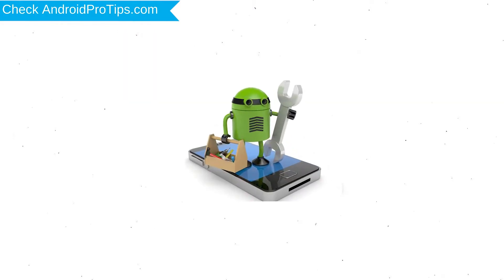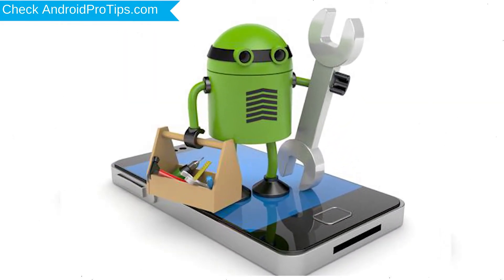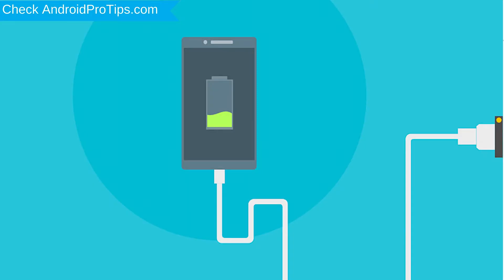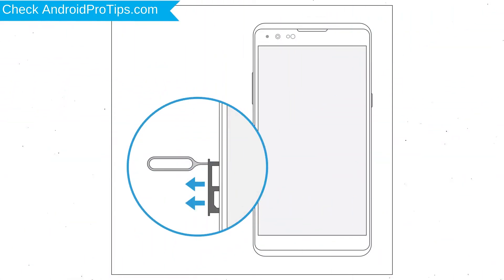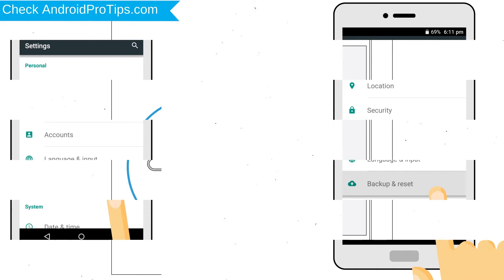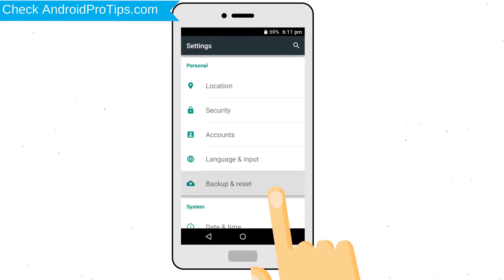Before resetting your mobile, your battery must be above 50%. Remove SD Cards and SIMs. Backup your Android mobile data if possible.